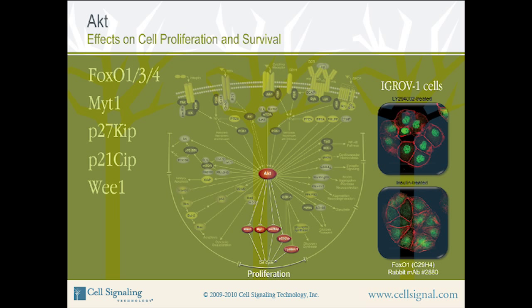IFIC analysis showing inhibition of the transcription factor FOXO1 by AKT in IGROV-1 cells is shown here. IGROV-1 cells are a human ovarian adenocarcinoma cell line. FOXO1 rabbit monoclonal antibody, product number 2880, has been labeled green. Actin filaments have been labeled red with DY-554 phalloidin. Treatment with LY-294002 results in PI3K inhibition and inactivation of AKT; FOXO1 remains active and enters the nucleus to activate transcription. Note nuclear localization of green signal with LY-294002 treatment. With insulin treatment, AKT becomes active, resulting in the phosphorylation and inhibition of FOXO1, causing nuclear export and inhibition of transcription factor activity. Note cytoplasmic staining of green signal in this panel.